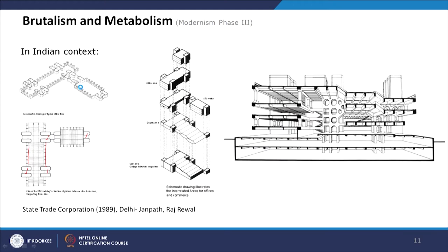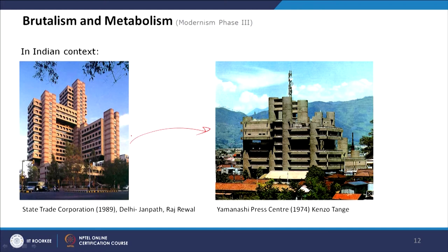In the section you can see the service cores, and the folded floor plates of the served spaces are inserted between the servant buildings. You can also see the visual connection and relation between the Yamanashi Press Centre by Kenzo Tange and Raj Rewal's building in Delhi.